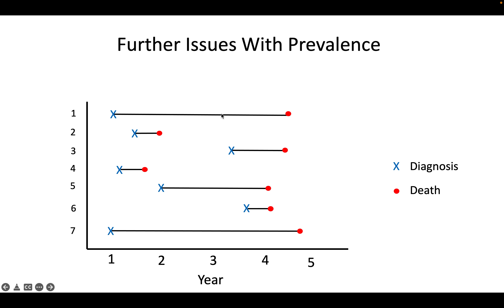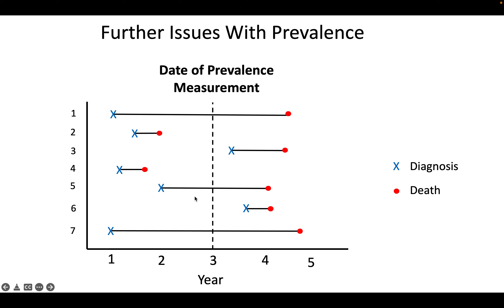Prevalence and incidence and disease duration is covered in more detail in another video, but briefly: if we're measuring prevalence at a given time, the people captured are those whose time between diagnosis and death — their time as a case — overlaps with our measurement. People with short disease duration who were diagnosed and died quickly, and people who haven't gotten the disease yet, are not part of this prevalence measure. So on a large scale, people with long disease duration are over-represented in prevalence.